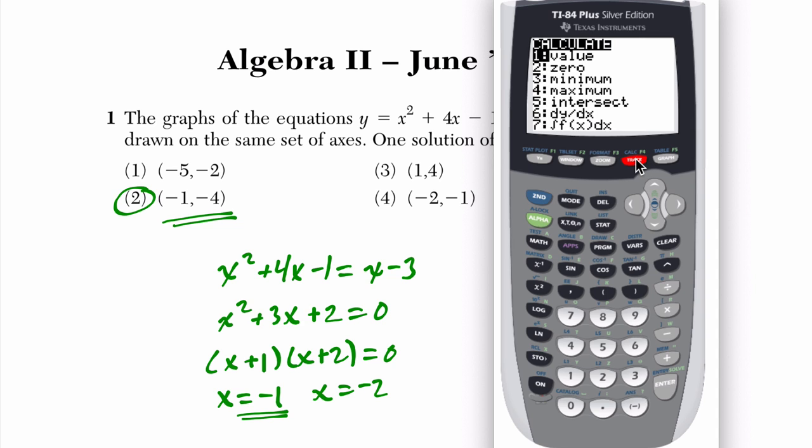And then if I hit second trace again, I go to kind of go over to the other point where they meet, which is like right here. On the first curve, enter. Go to the line, enter. And I'm going to guess about there. Enter. And I get the other point, negative 1, negative 4, which is the choice that we found.